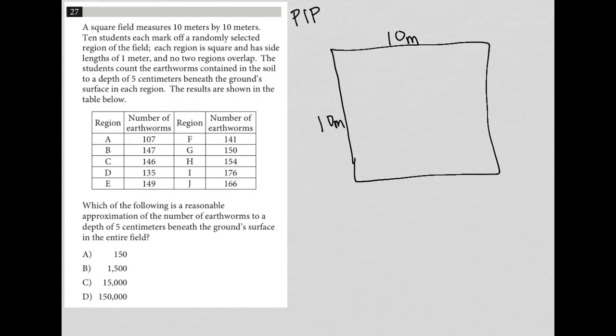10 students each mark off a randomly selected region of the field. Each region is square and has side lengths of one meter and no two regions overlap. So I'm going to give an example of one of those regions. I'm going to just choose this right corner over here and say that it is one meter by one meter.